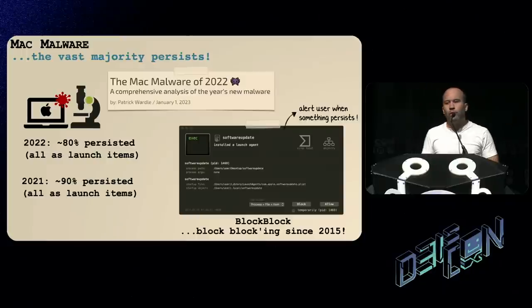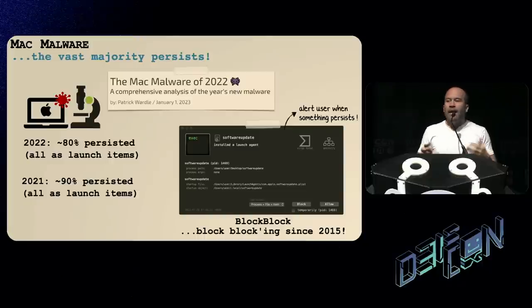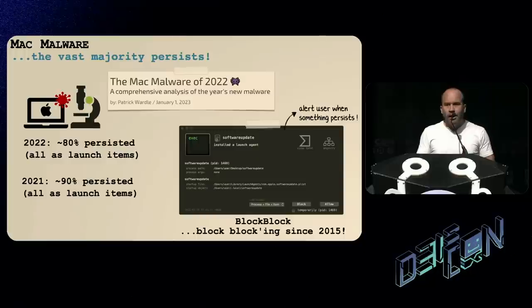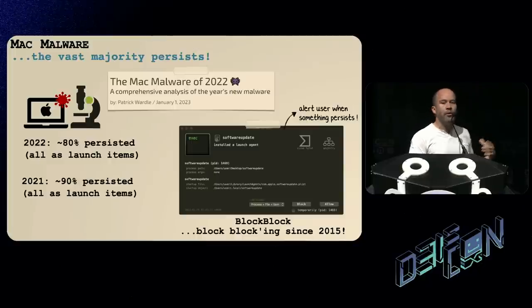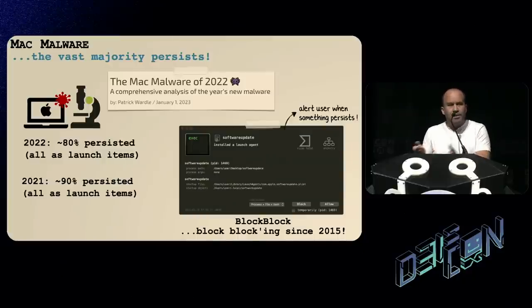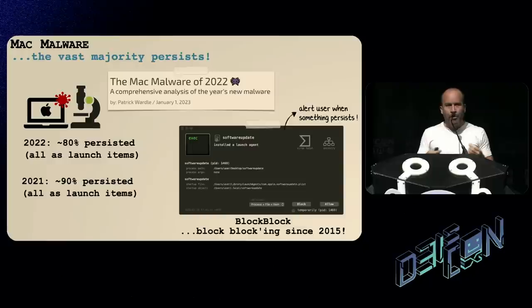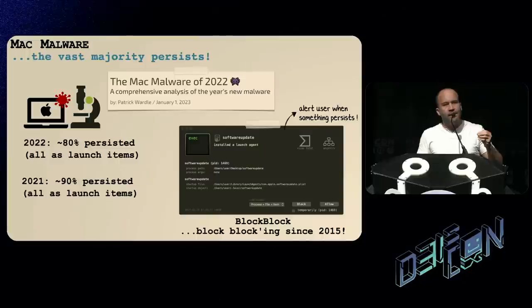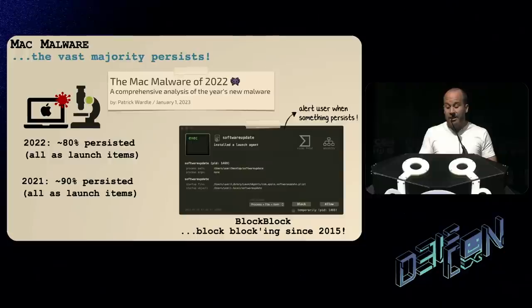So I released a free open source tool called BlockBlock, which monitors for persistent activity and then alerts the user. This is essentially what Apple is doing now — it took them about 10 years to realize this is a good idea. From a security point of view, it's great that this is now built into the operating system. This reiterates that Apple has also realized that because most Mac malware persists, this is a great way to alert the user that perhaps something has slipped into their system.